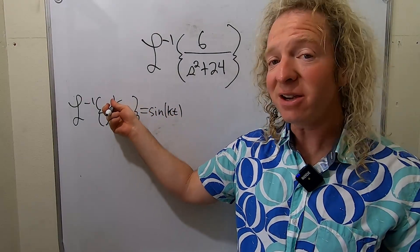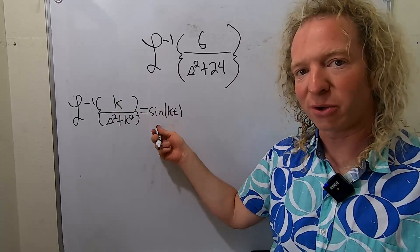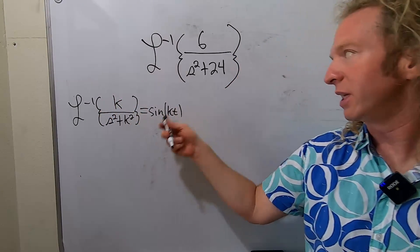If you have an s here, just remember cosine has the s and that gives you cosine. So if you had an s here, you'd get cosine. But because we have a number, we're going to get sine.